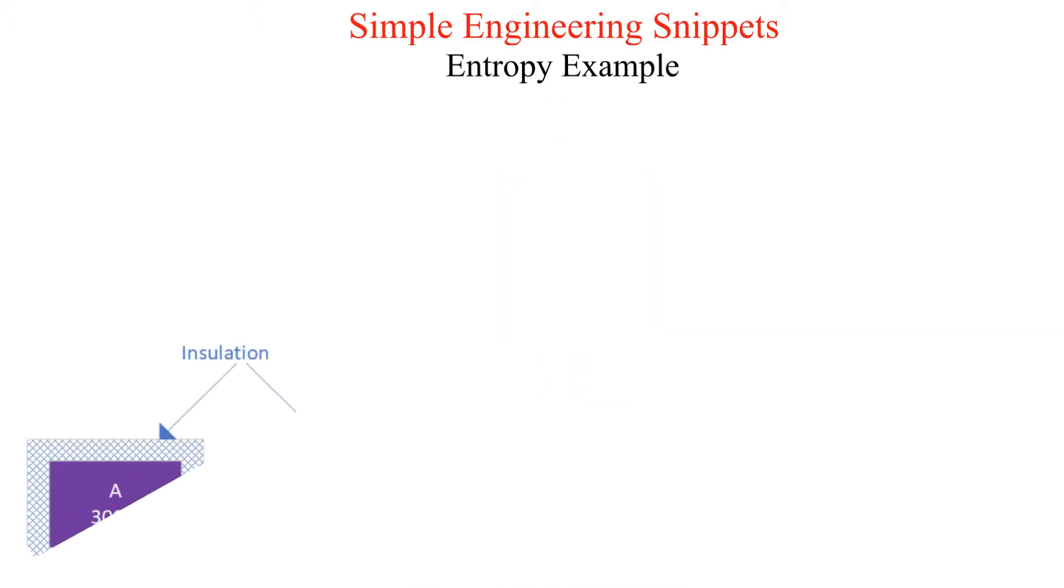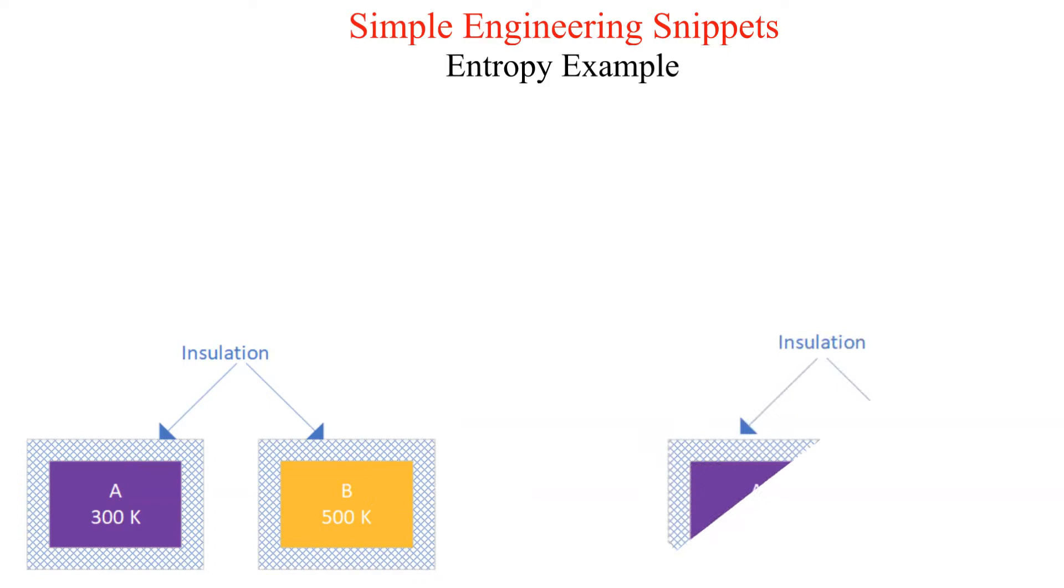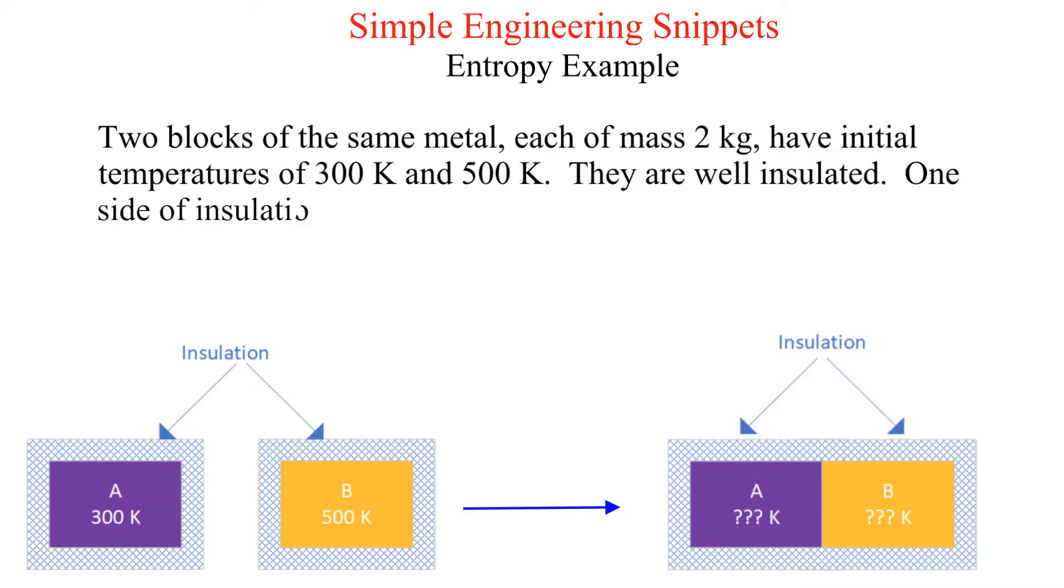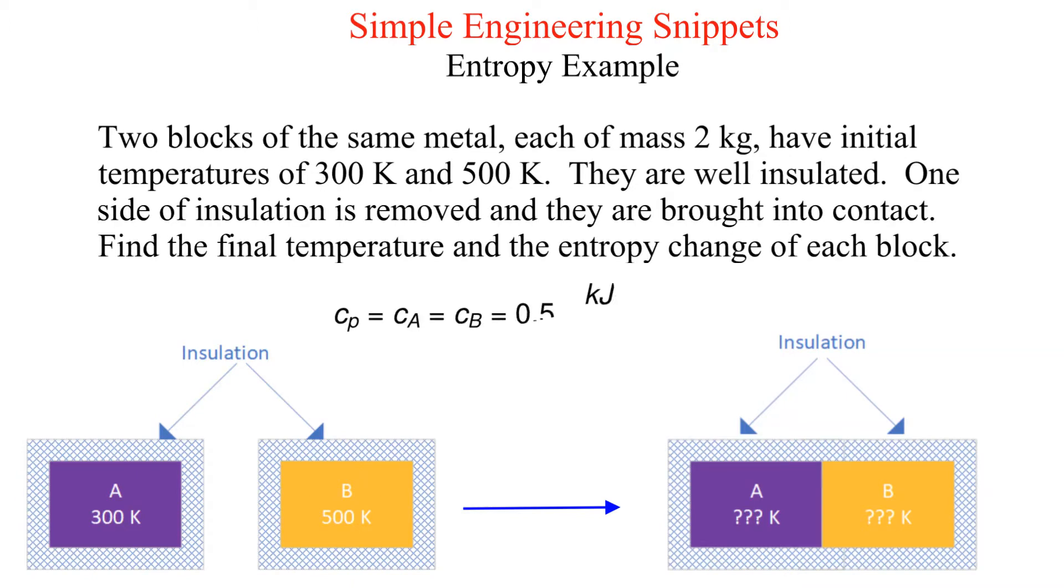Here is the problem statement. Our system consists of two blocks of the same metal, differing only in their initial temperature. Blocks remain well insulated from the surroundings throughout the process. The blocks are brought into thermal contact where we will find the final temperature and the change in entropy.